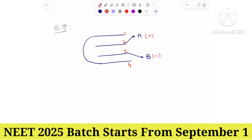With four plates, equally spaced, we will get three capacitors: C1, C2, C3. We label those capacitor names as C1, C2, C3. For N plates, we will get N minus 1 number of capacitors.